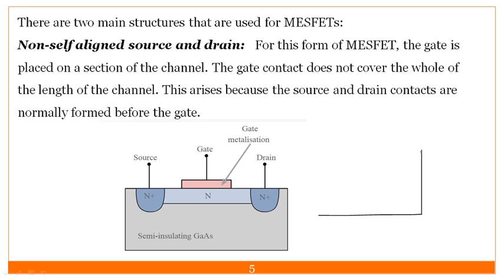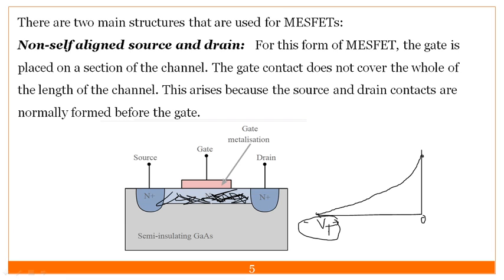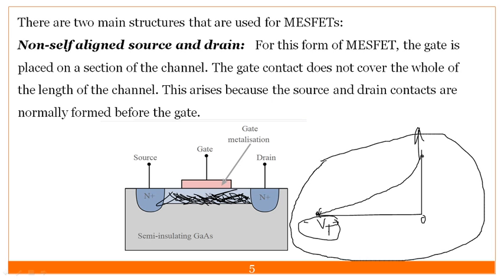At zero volts gate voltage, the current is maximum. As you increase the negative voltage — minus one, minus two, minus three — the current keeps decreasing. At a certain negative voltage called minus Vp, the current becomes zero. No electrons are present and no current flows. This voltage at which the current ceases to flow is called the pinch-off voltage.